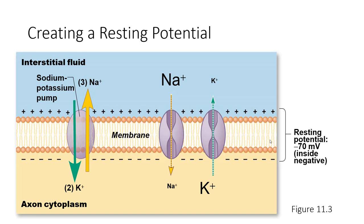That will be about negative 70 millivolts. The sodium-potassium pump puts three positively charged sodium ions out and allows two positively charged potassium ions in, making a higher concentration of potassium inside the cell. Potassium will want to go out via leak channels, but the positive charge outside makes it harder for potassium to leave. This creates an electrochemical gradient that we call a resting potential.